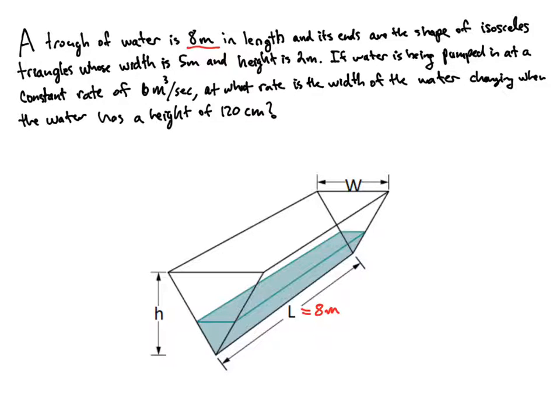The ends of the trough are isosceles triangles, so that means each leg is going to be congruent. The width of the triangles is 5 meters, so this is 5 meters here, and it's going to be the same over here. And the height is 2 meters.